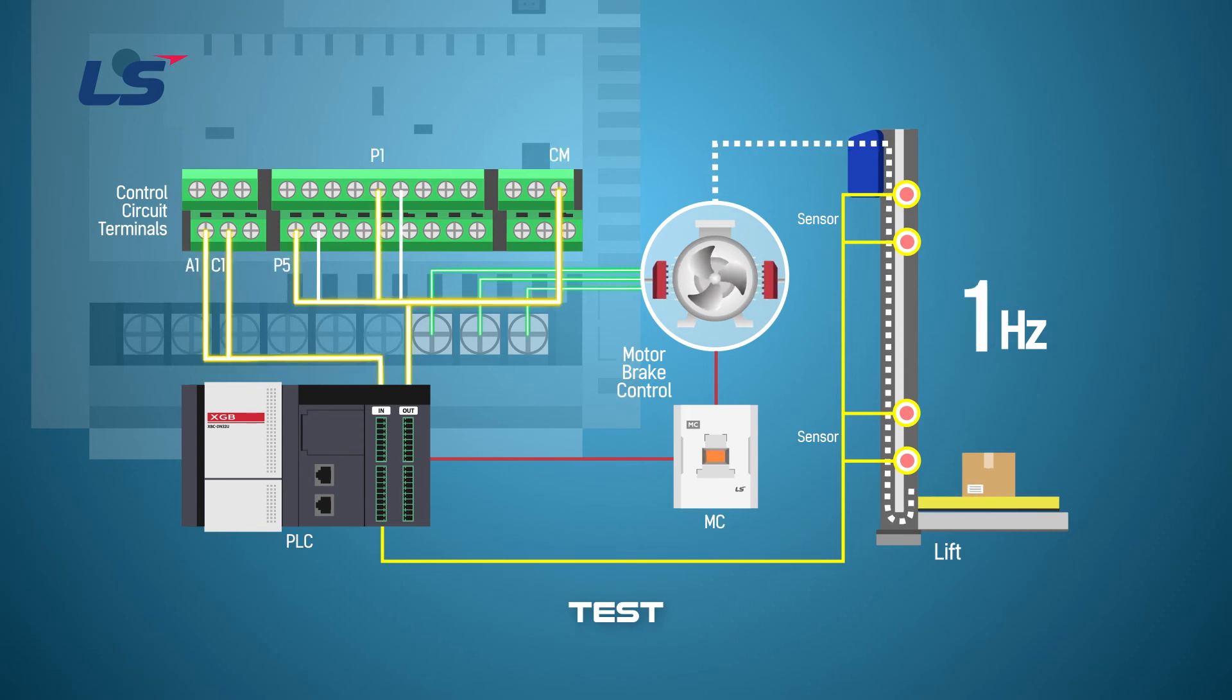When the brake is opened according to the conditions set in the BR control and it passes the sensor at the bottom, it switches from P5 to P6 and the speed increases.